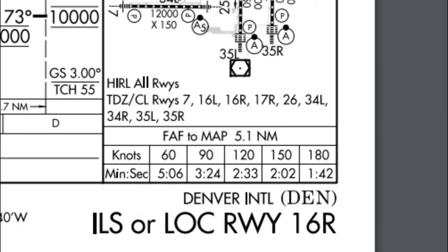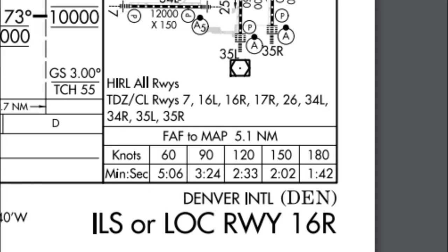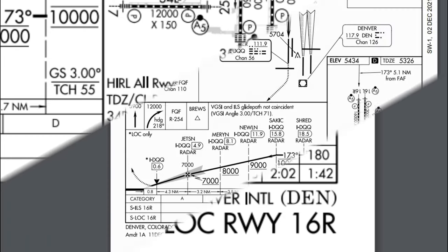Below the runway lighting section we have a chart for calculating distance based on your speed. For example, if you were going 60 knots, in 5 minutes and 6 seconds you have traveled 5.1 nautical miles. That's just another way to keep track of where you are on the approach.